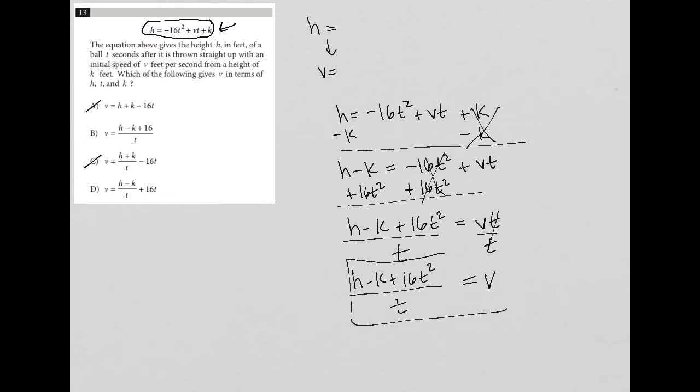And then I have h minus k plus 16t squared all over t. So that's my new equation. So now do I see that? So looking at answer choice B, h minus k plus 16 over t. So that's very close, but I have a 16t squared over t. So I'm not sure how you just completely remove a t squared from there. So I'm going to get rid of B.